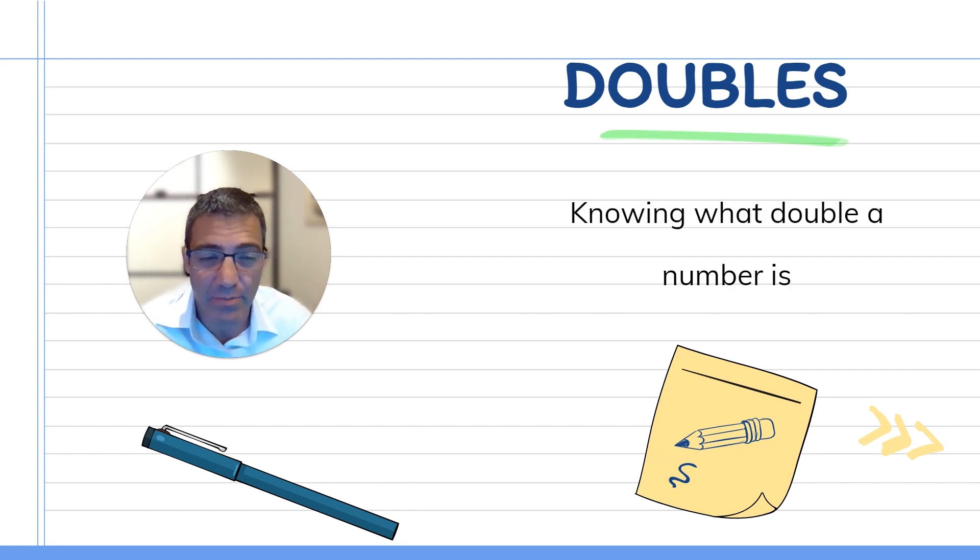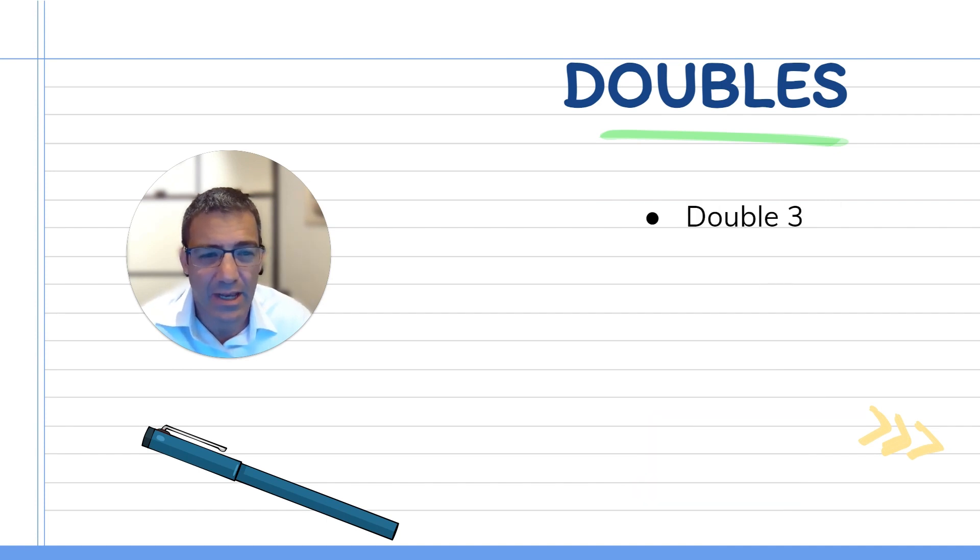Now for grade one and grade two specifically, knowing what double a number is can start with a very easy concept like what is double three? Double three is six. What is double five? Well, that gets you to a block of 10. That's 10. Doubling numbers will also teach you the twos times tables. So this is a good extension in terms of what doubling does. What about double seven? This gets a little bit tricky, right? Seven plus seven is 14.